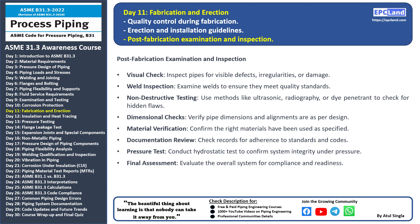Welcome back to our ASME B31.3 30-day beginner course. In today's session we'll be delving into post-fabrication examination and inspection — a crucial step to ensure the quality and integrity of your piping system after fabrication. After the pipes have been fabricated and the system is set up, it's essential to thoroughly examine and inspect the entire system. Visual check: start by visually inspecting the pipes for any noticeable defects, irregularities, or damage.